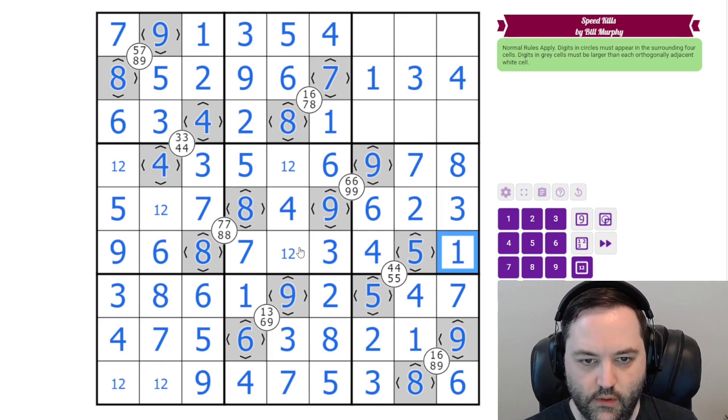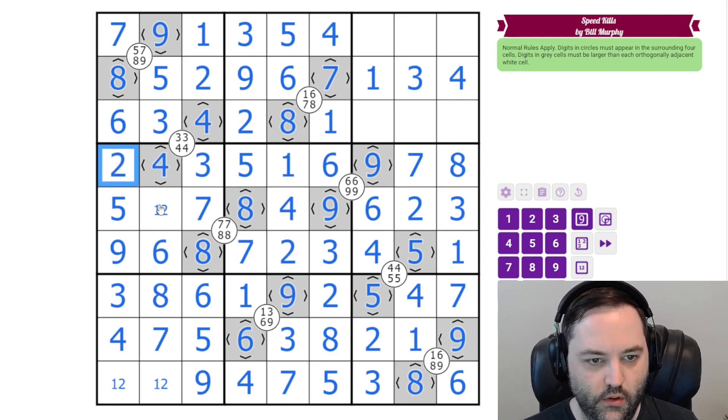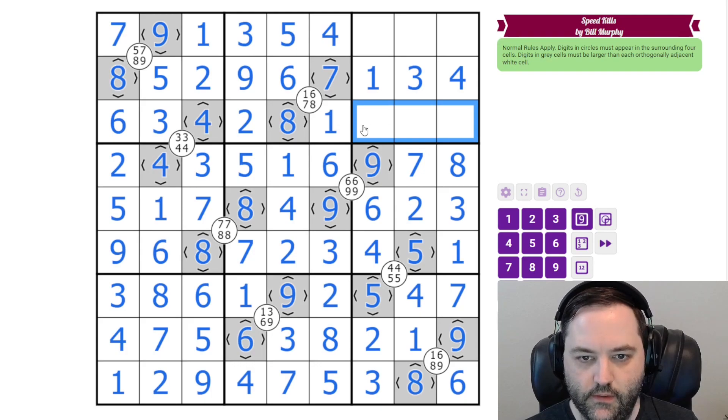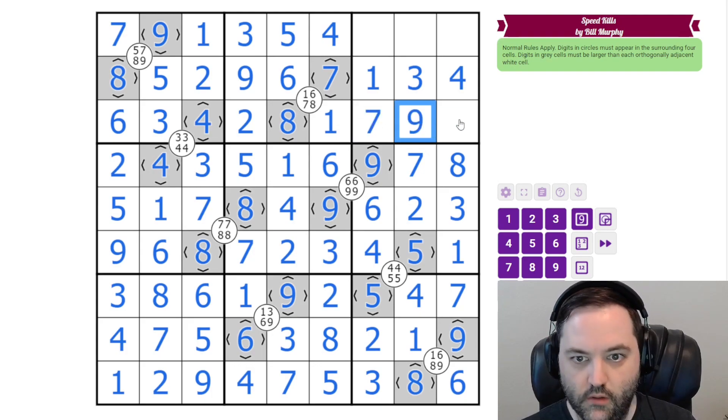Down here we still need 1 and 2. This 1 is going to resolve 2, 1, 2, 1, 2, 1. These are 5, 7, and 9. Figure out the order looking down the columns.